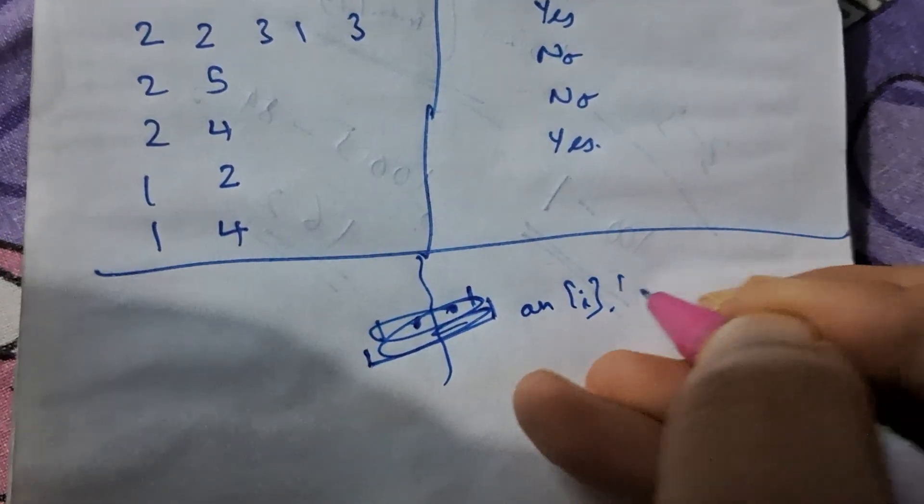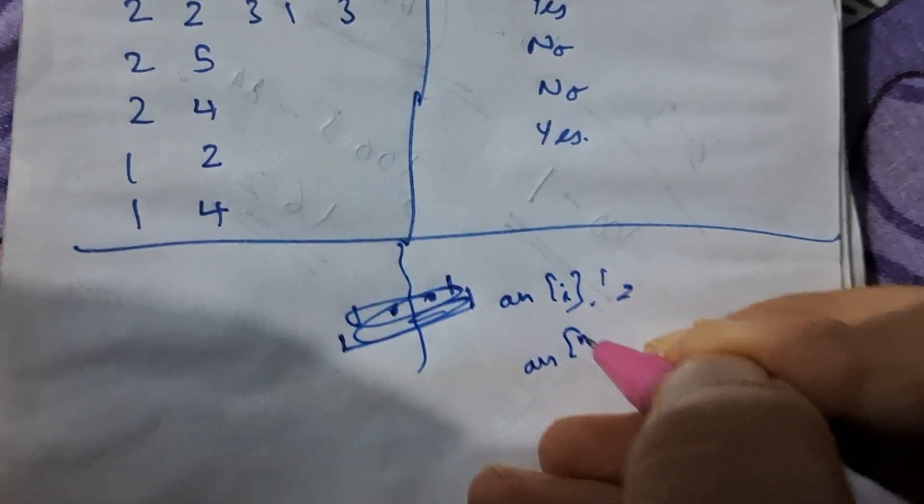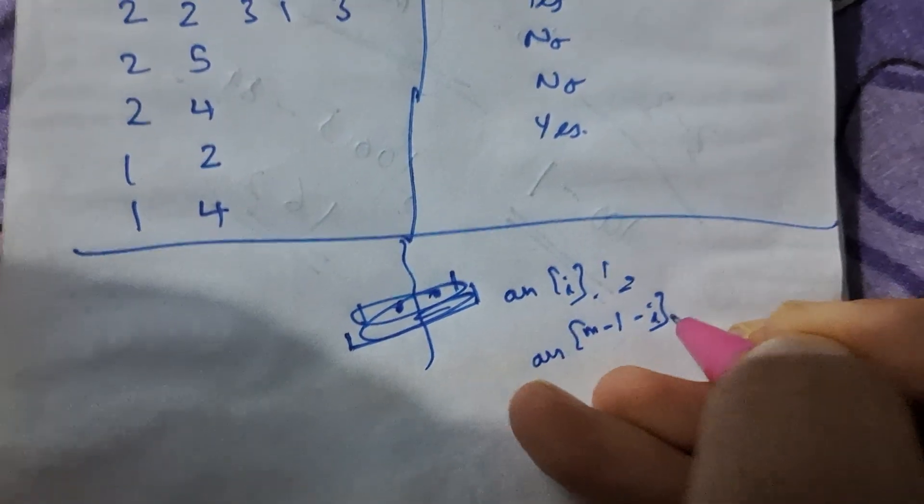Which basically means that arr[i] is not equal to arr[m minus 1 minus i]. So that is what anti-palindromic means.